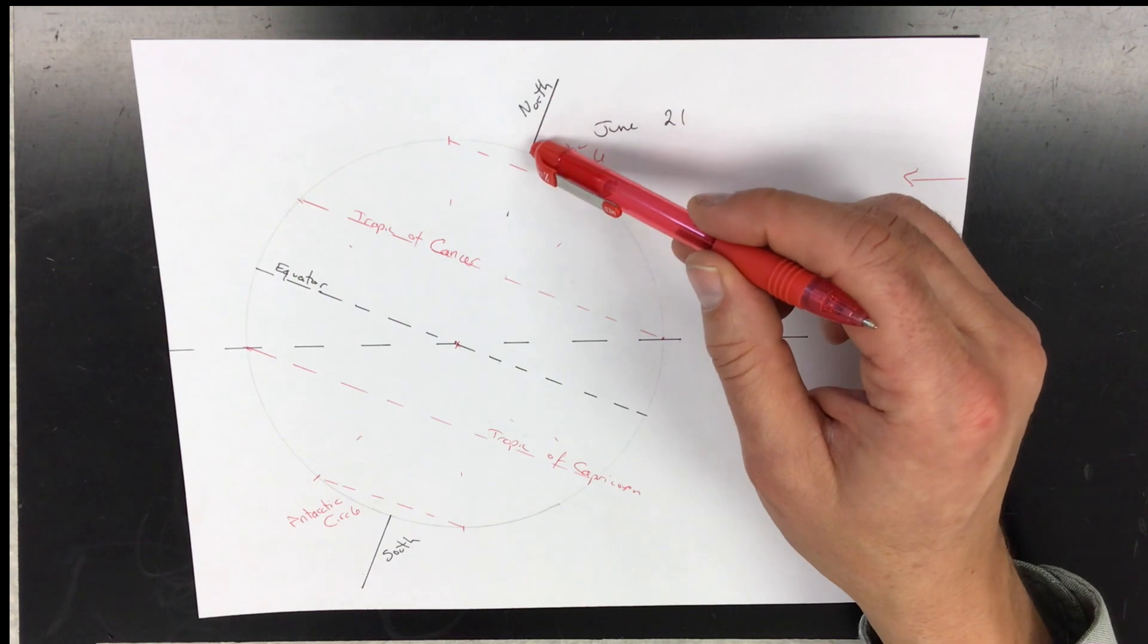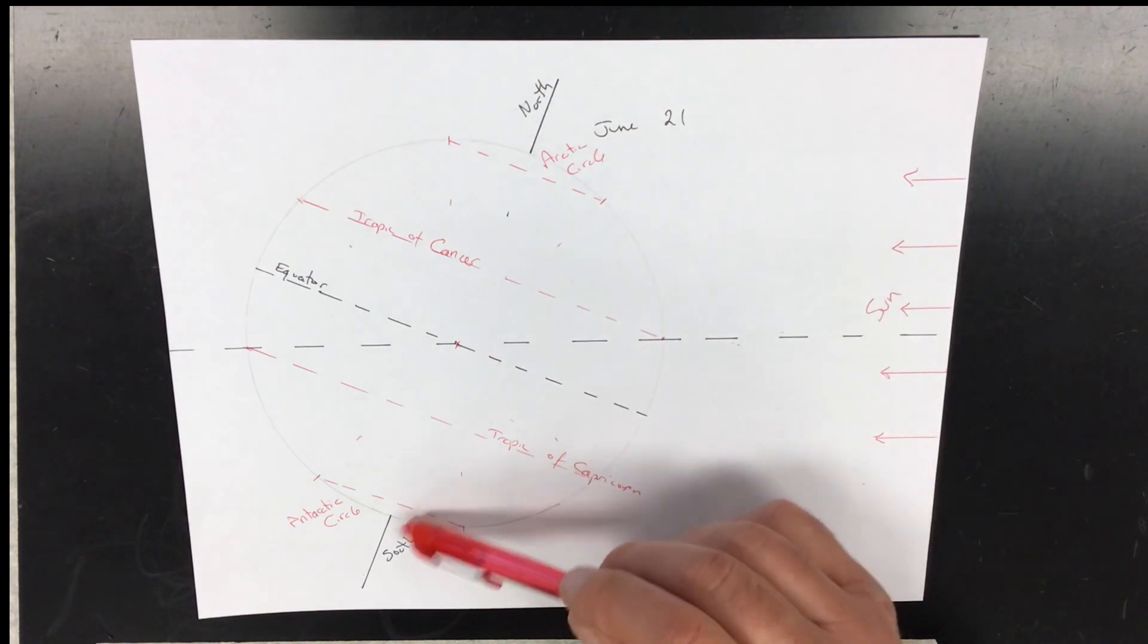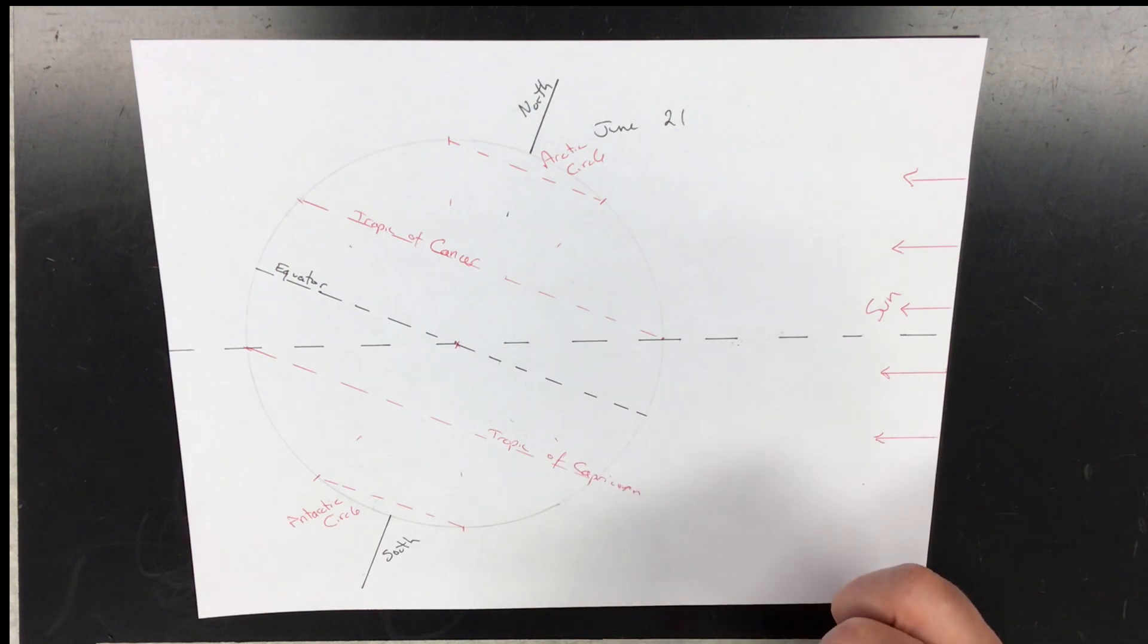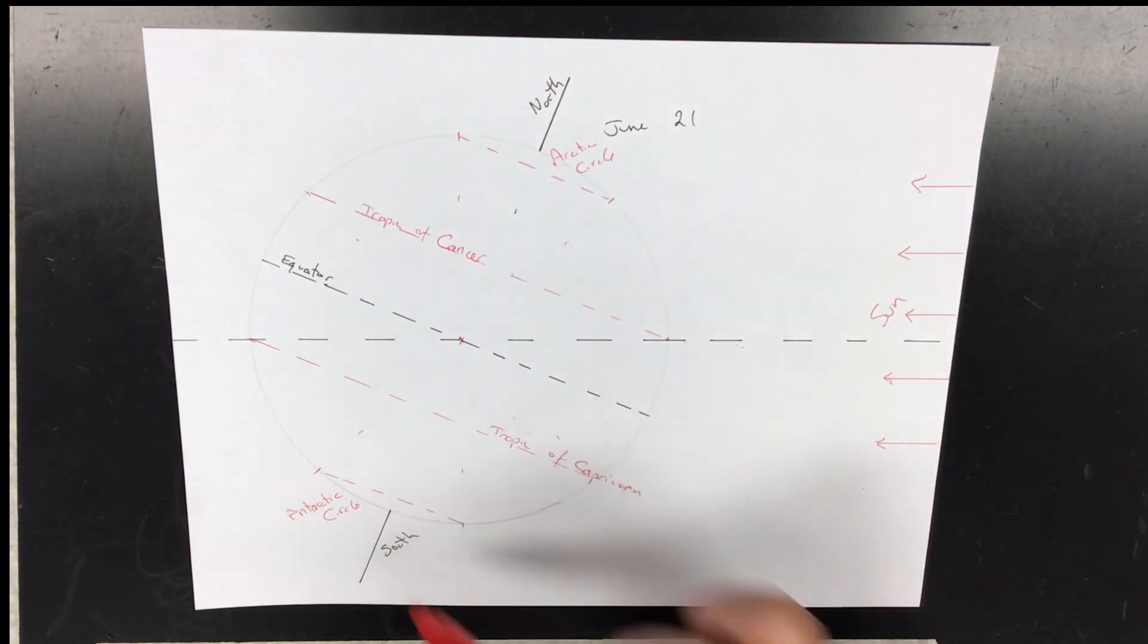Sun stays at 23 and a half degrees above the horizon all day long at the North Pole. The sun isn't seen at the South Pole, nor anywhere in the Antarctic Circle. One sunrise per year at the North Pole, one sunset per year at the North Pole, one sunrise, one sunset at the South Pole each year.